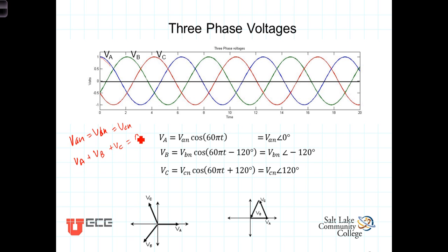To see that graphically, let's look at the phasor domain or the phasor representation of these three. There's V sub A with a zero phase angle, V sub B, same amplitude, just lagging by 120 degrees, minus 120, and then VC with a positive 120 degrees.